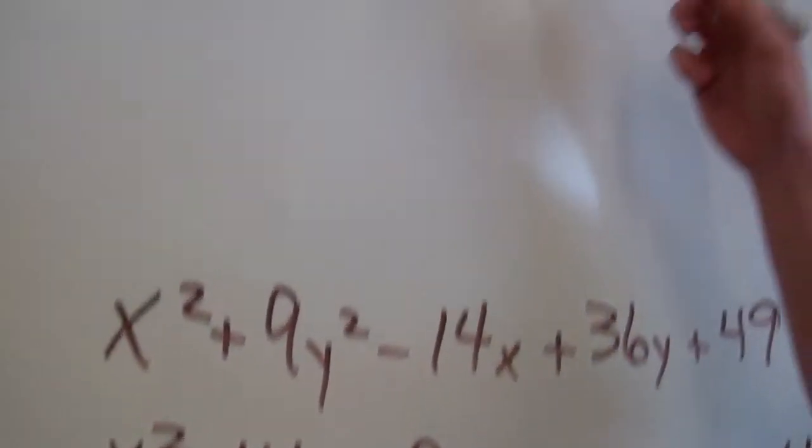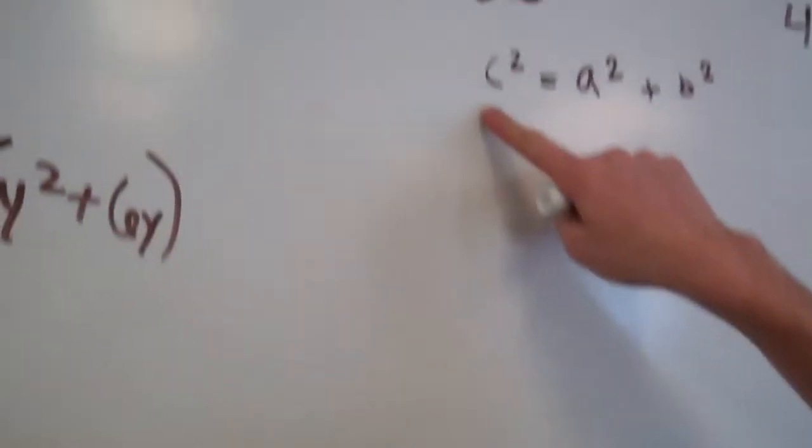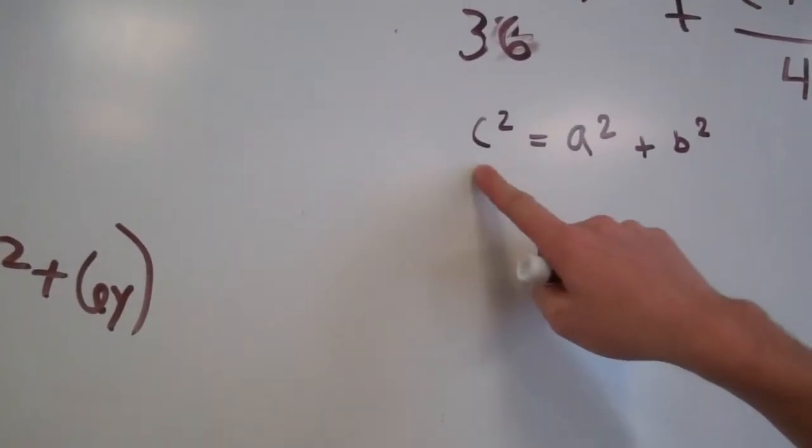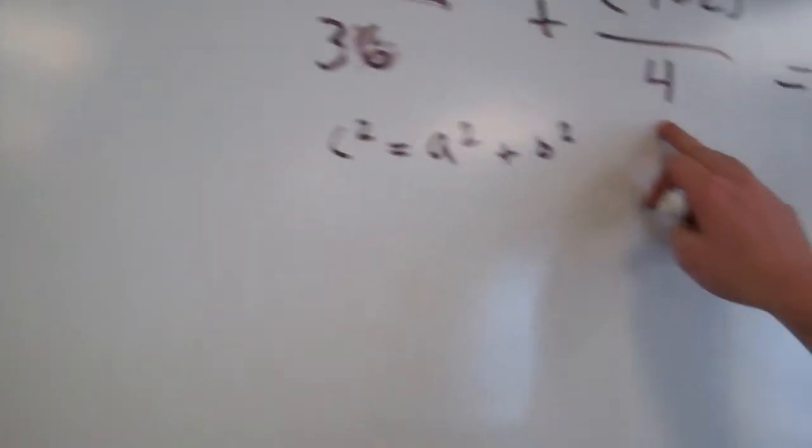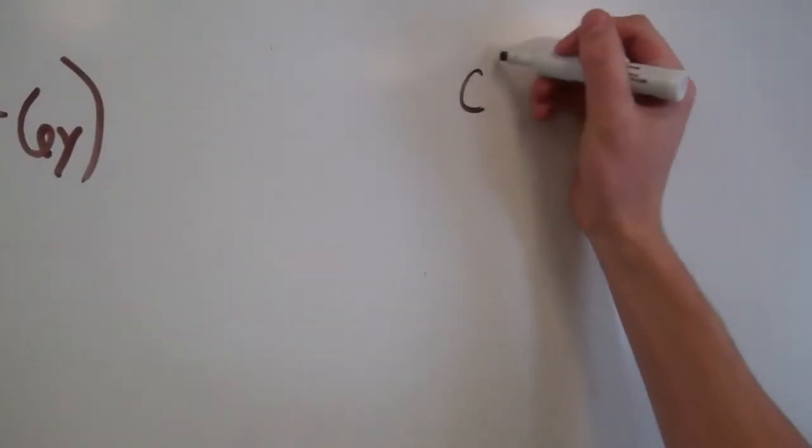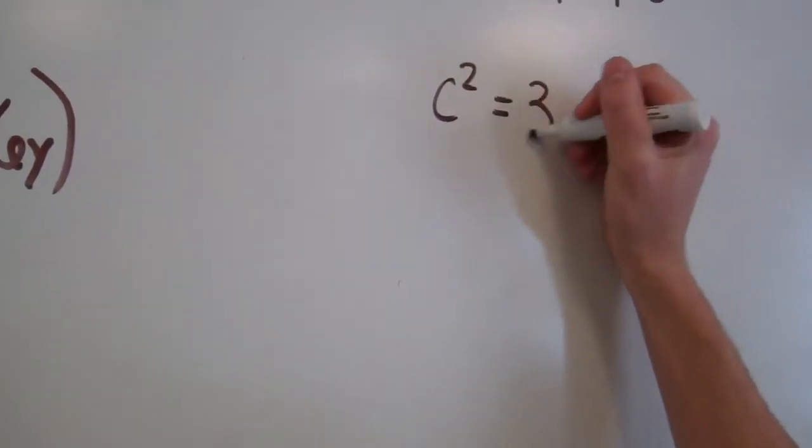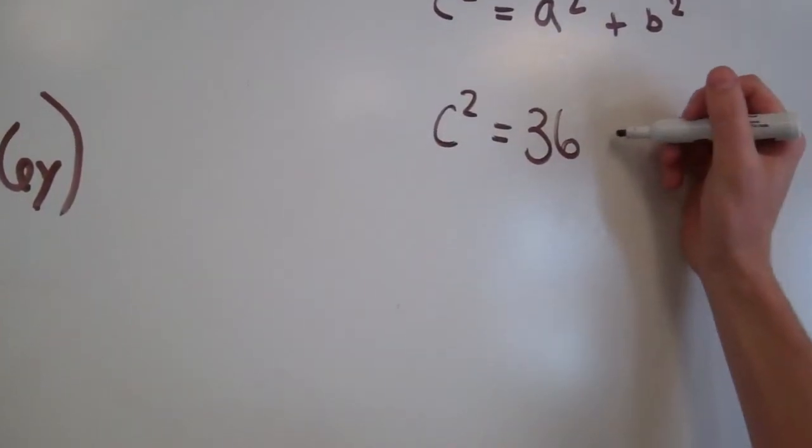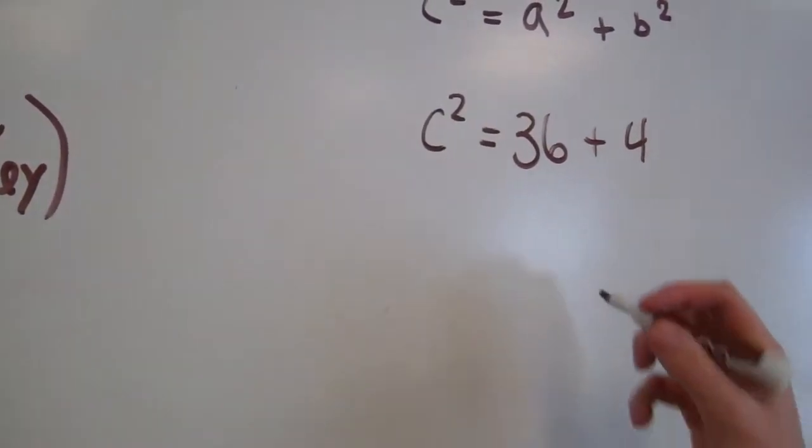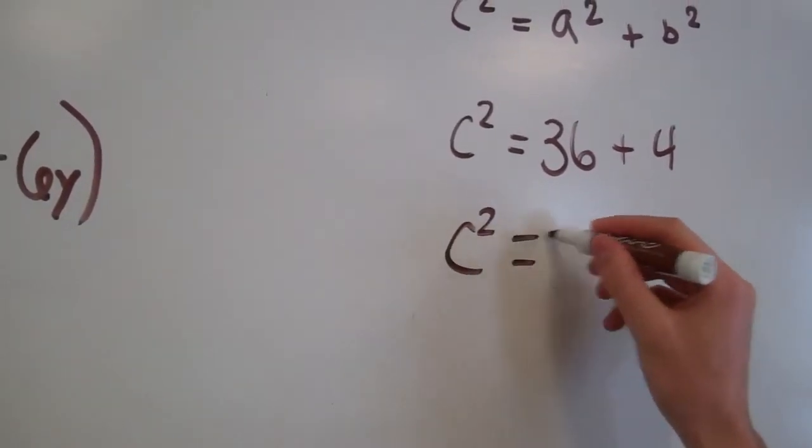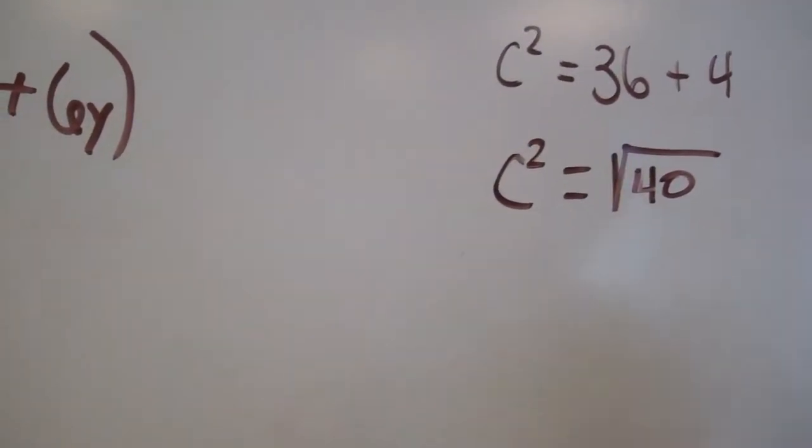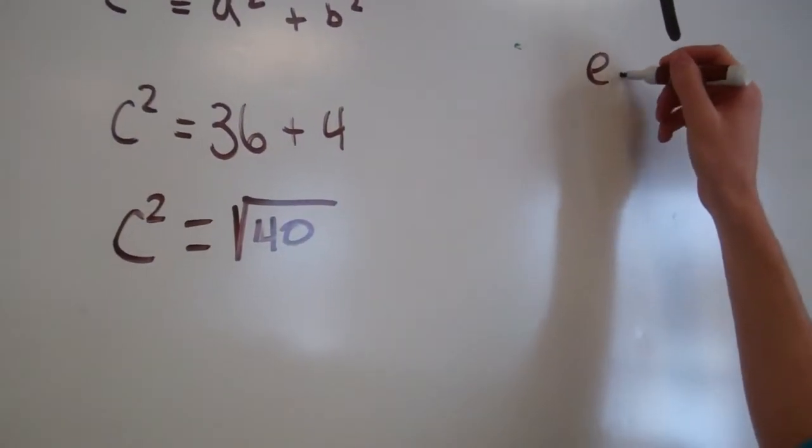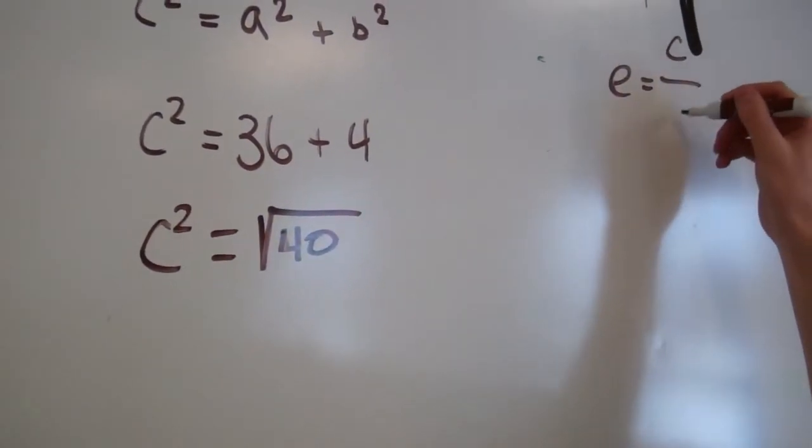So basically, you have your Pythagorean theorem, and you know a squared, and you know b squared. So, c squared equals the square root of 40, and the equation for the e equals c over a.